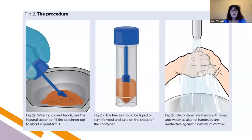For stool samples, it's important to get a good volume — usually a third to a half of one of the containers. It's really important to wash hands before and after taking the samples. Soap and water should be used because organisms such as norovirus and Clostridioides are resistant to alcohol gel, so good old-fashioned soap and water is what you should use when dealing with these samples.